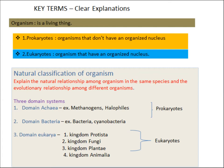All organisms on earth, including humans, are classified according to two methods: artificial classifications and natural classifications. Here you are learning about the natural classification. Natural classification explains the natural relationship among organisms in the same species or among different species.